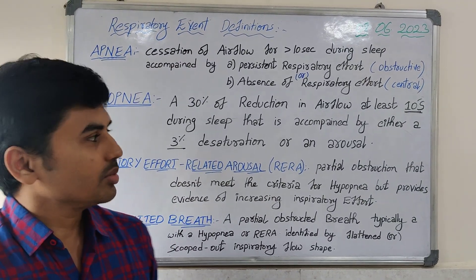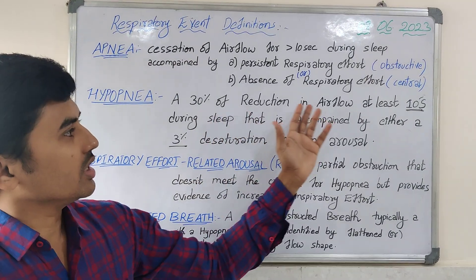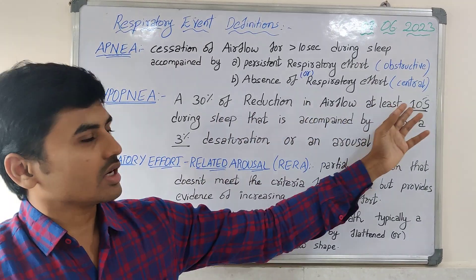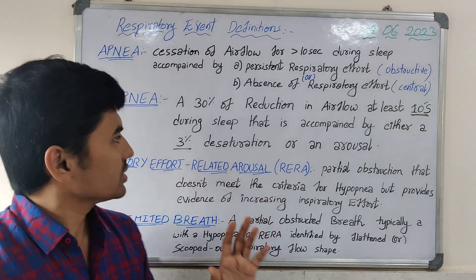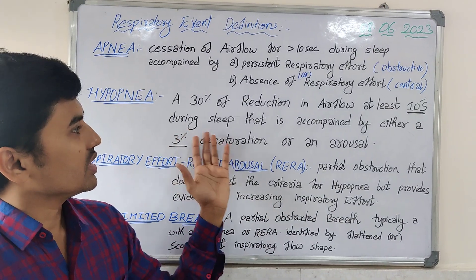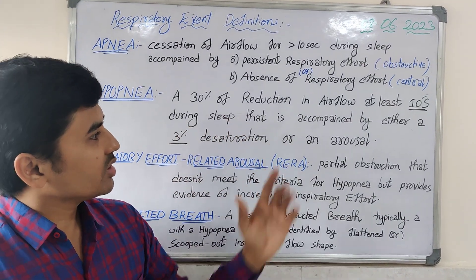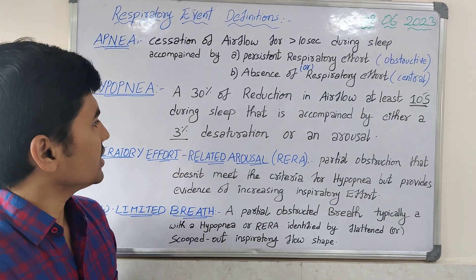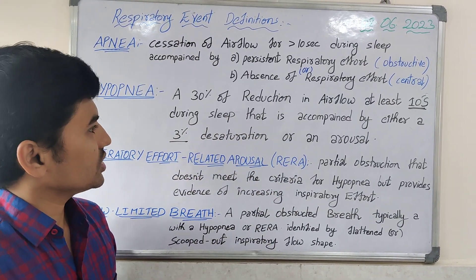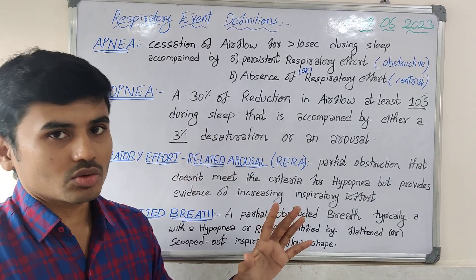Hypopnea means a 30% reduction in airflow of at least 10 seconds during sleep, accompanied by either a 3% oxygen desaturation or an arousal.